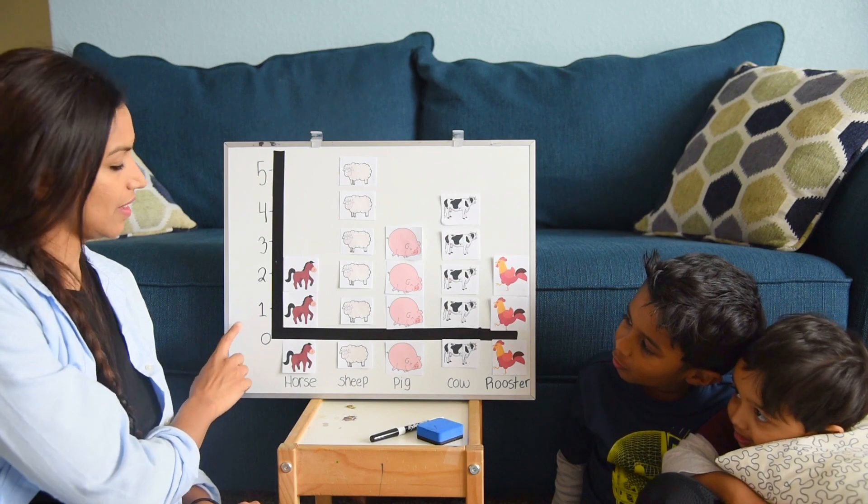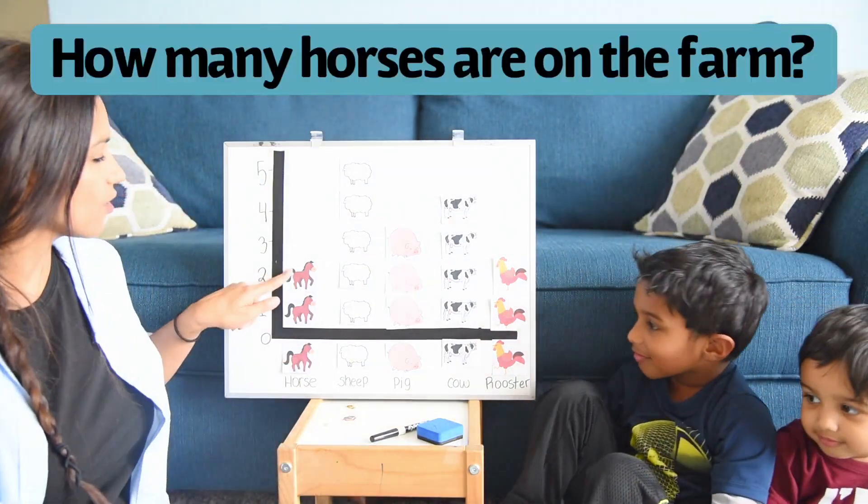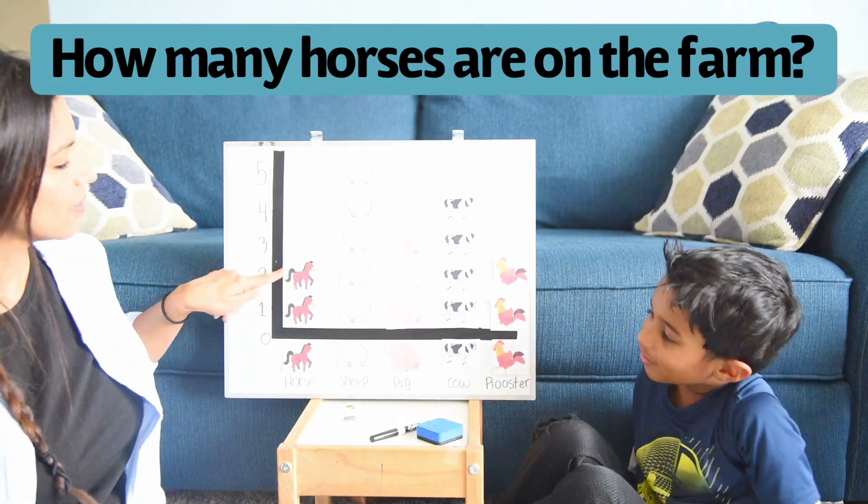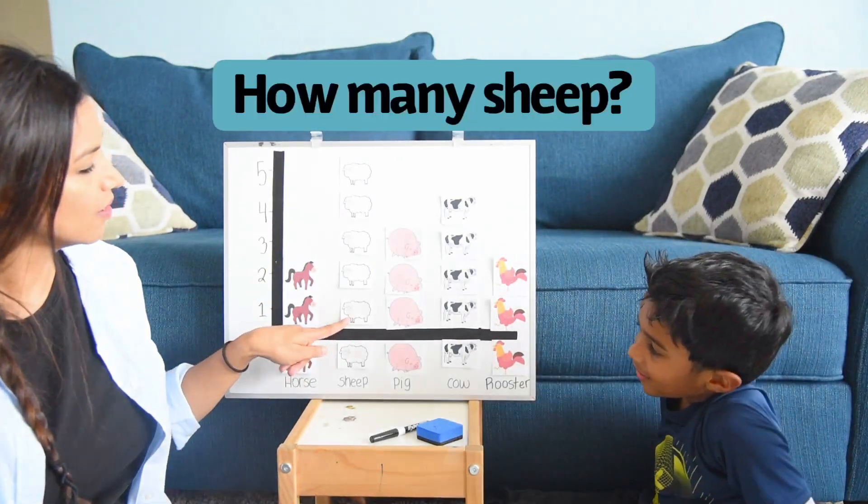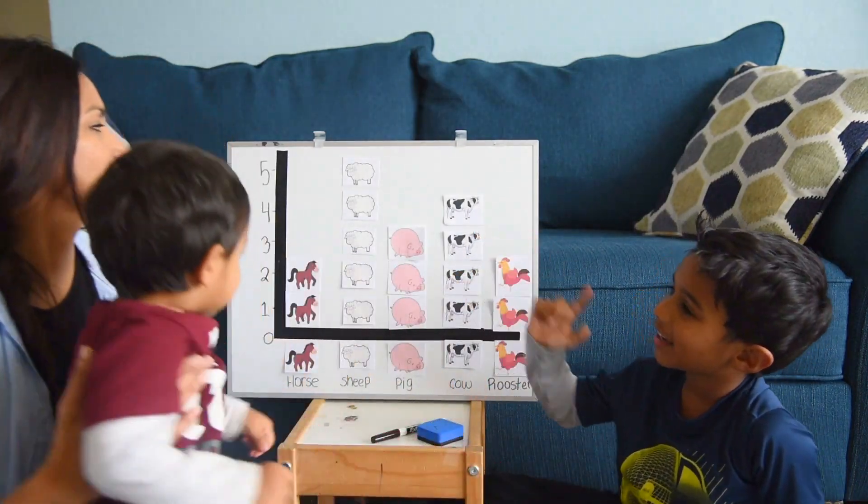One, two. This number means how many. So how many horses are on the farm? Two. How many sheep? Yeah, one, two, three, four, five. Five.